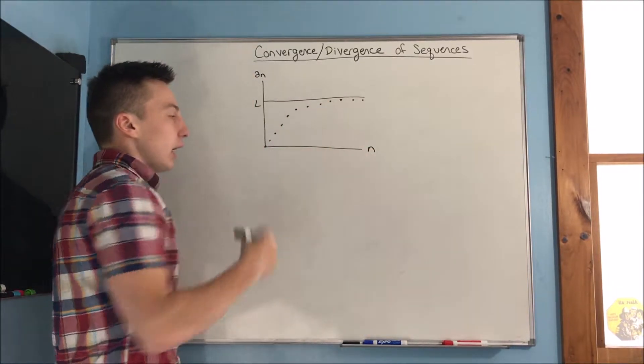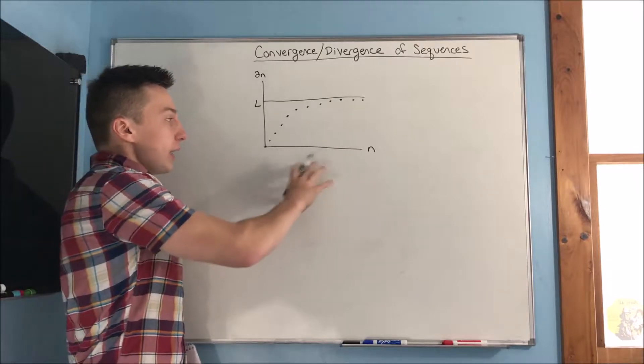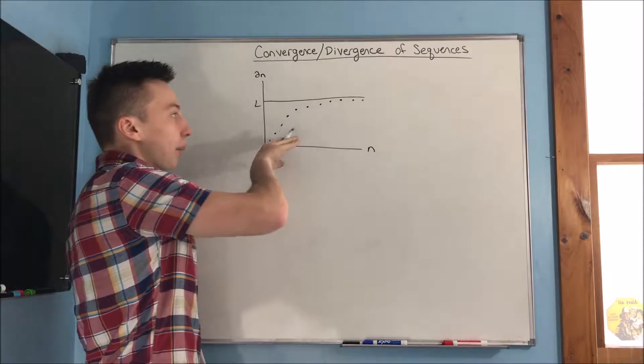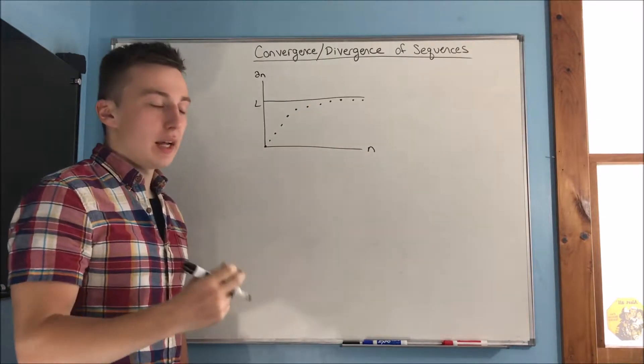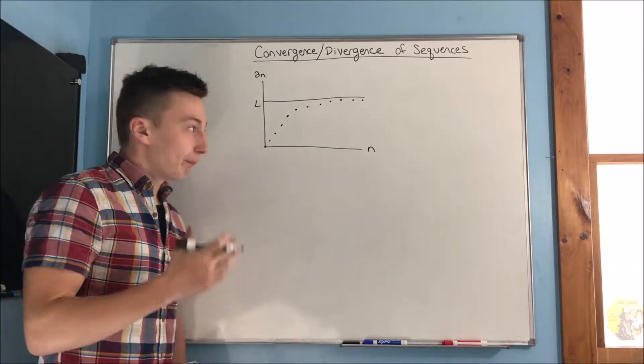So n can only be an integer. Now, you can see here that as our sequence proceeds, as n gets bigger and bigger, it's approaching, a sub n is approaching L. It's approaching L, whatever you want that value to be, call it 2, call it 3, whatever.